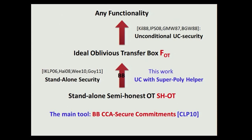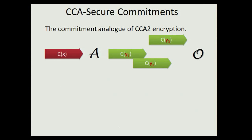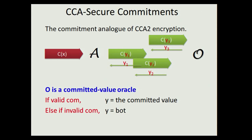The main tool we use in this step is a black box construction of a notion called CC Secure Commitment, which was first introduced by Knutting and Pass in 2010. This is really the key notion that enables our results. CC Secure Commitment, at a very high level, can be viewed as the commitment analog of CCA2 encryption. Consider a man-in-the-middle execution where an adversary is trying to break the hiding property of a left commitment while having access to an oracle that breaks commitments of its choice.